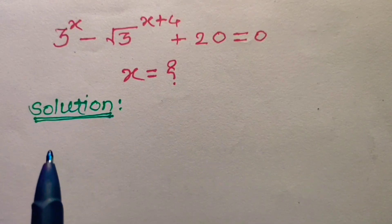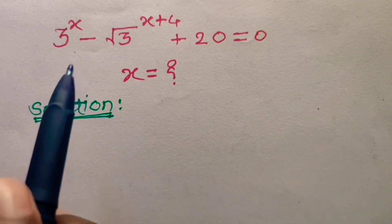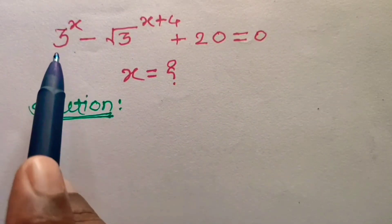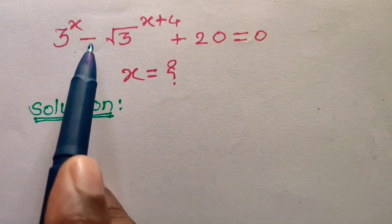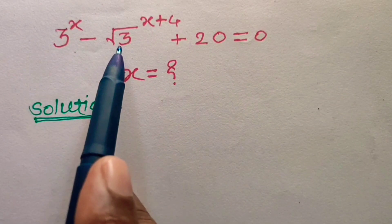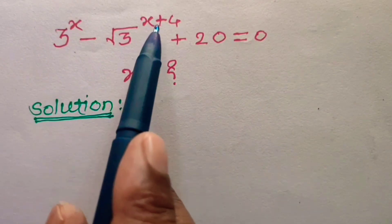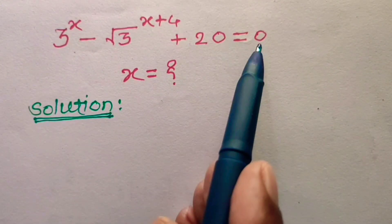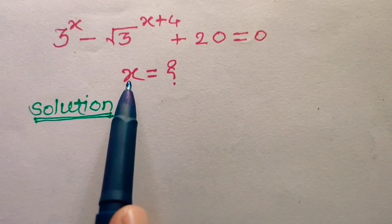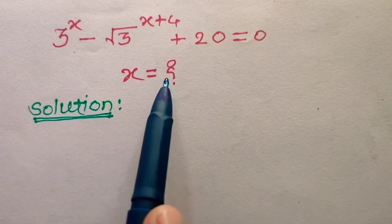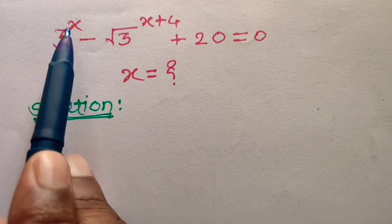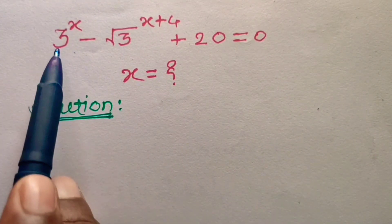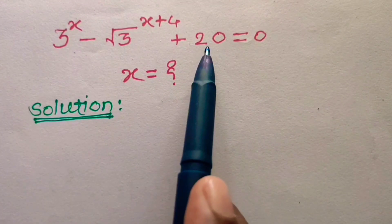Hello everyone, welcome in today's session. Here we have a look at this problem: 3 to the power x minus square root of 3 to the power x plus 4 plus 20 is equal to 0. We have to find the value of the unknown variable x. Here x appears in the power and the base is a constant, and the third term is also constant.